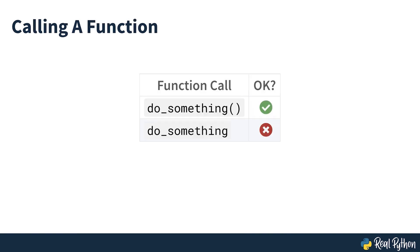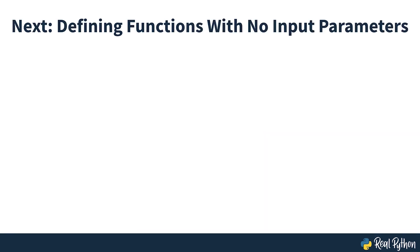You'll need to add parentheses after the function name when you call it. Since functions represent actions, it's best practice to start your function names with a verb to make your code more readable. In the next section of the course, you'll see how to define functions with no input parameters.